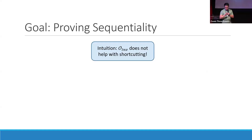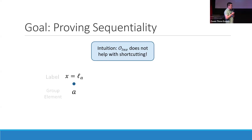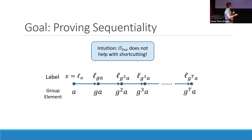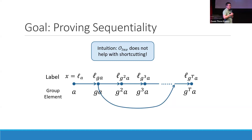We want to show that the inversion oracle cannot help you shortcut the sequential computation. For our function, you start with a label for a group element A, and iteratively call the multiplication oracle — you get G times A, G-squared times A, all the way until you arrive at the answer. What we want to say is that using the inversion oracle, you cannot bypass some of these sequential computations. You still have to follow this computation path, which makes it sequential.